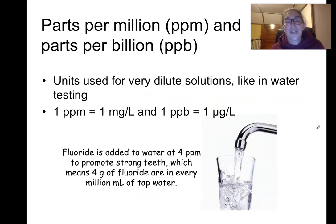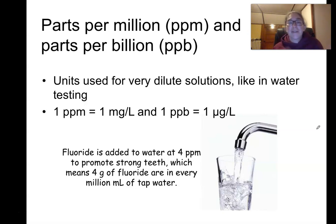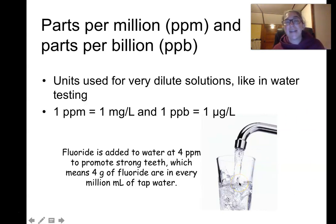Parts per million and parts per billion are used for very, very dilute solutions — commonly for testing water quality and looking for toxins like heavy metals such as lead and arsenic, where even very small concentrations can be toxic. Fluoride levels in fluoridated water to strengthen tooth enamel are also measured this way.